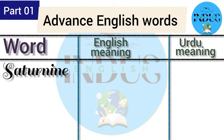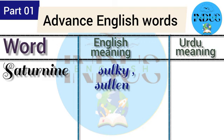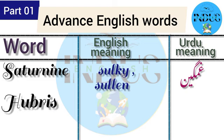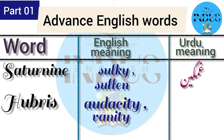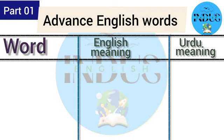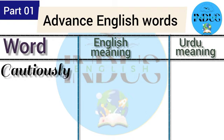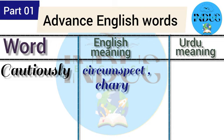'Sodden' means sulky or sullen. In Urdu, it means gamgeen. 'Hubris' means audacity or vanity. In Urdu, it means magroor. 'Cautiously' means circumspect or chary. In Urdu, it means ehtiyatse.